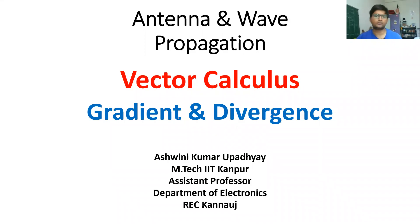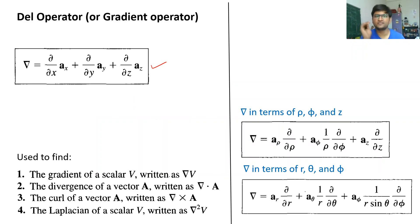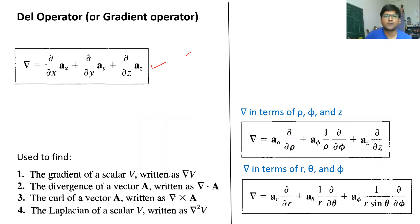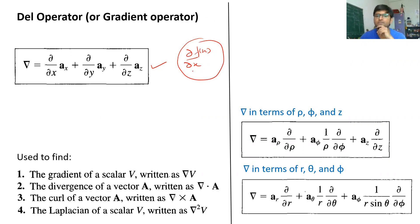In this lecture we will talk about the del operator, gradient, and divergence. This symbol you must have seen in engineering mathematics. Let us first know what it physically represents. You must have studied the single-dimension partial differential del/del-x. If you take del/del-x of some function, it represents the change of that function in the direction of x. This represents only the one-dimensional x direction.